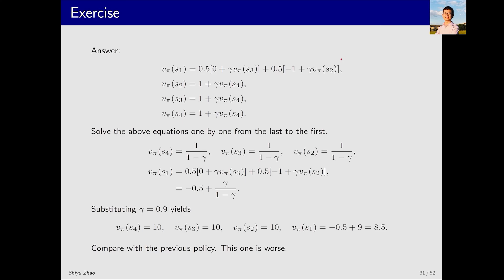Similarly, we can write out equations for S2, S3, and S4. We can solve this system of equations and then substitute a specific value for gamma. This gives us the state values. Note that the state values of S4, S3, and S2 remain the same as before, all equal to 10. However, under this policy, the state value of S1 is 8.5, which is lower than 9 in the previous policy. This indicates this policy is not as good as the previous one.